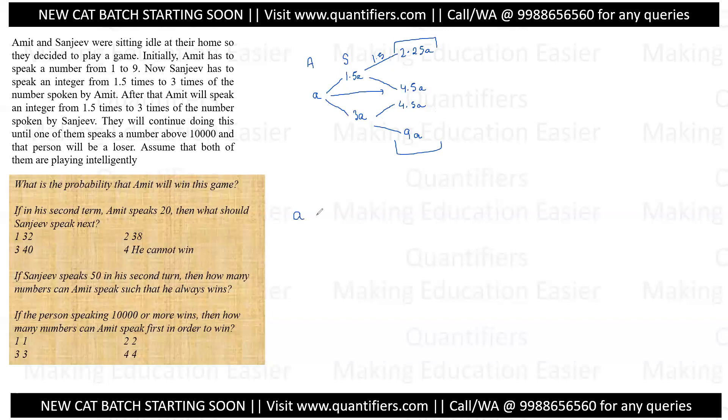Amit should observe that no matter what number Sanjeev speaks, Amit is definitely reaching 4.5 times of his initial number. So Amit has concluded one thing that he is definitely reaching 4.5 times of a particular number no matter what he speaks.